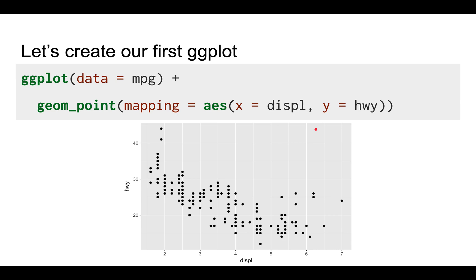So let's create our first ggplot. And this is what the code looks like. The code is split over two lines. So this is a single statement. But the plus means that this first line is not complete and R should run both lines together.